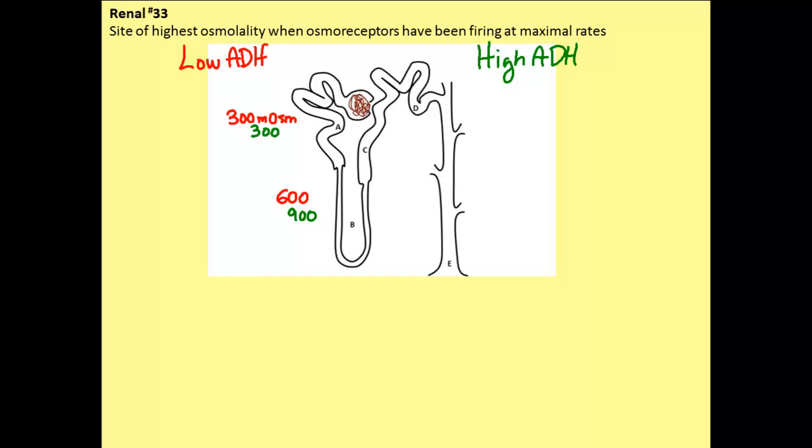Now you will recall from lectures, the reason why the osmolality is higher in that medullary interstitium is because of the presence of urea whenever ADH is released in the insertion of the urea pores. Let us then go to C, which is in the thick ascending limb. I want you to recall that regardless of whether ADH is high or low, this area is always impermeable to water.